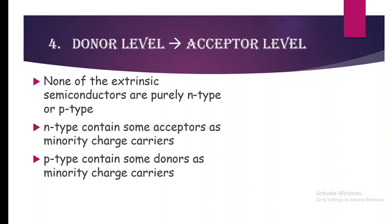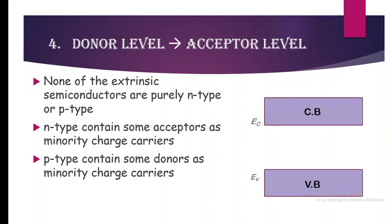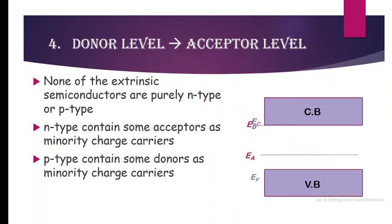This is the general case — every semiconductor is of this form because 100% pure single-type semiconductor is not possible to obtain. Considering the conduction band and valence band, both the donor level and acceptor level will be present.